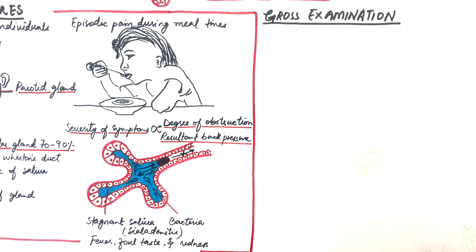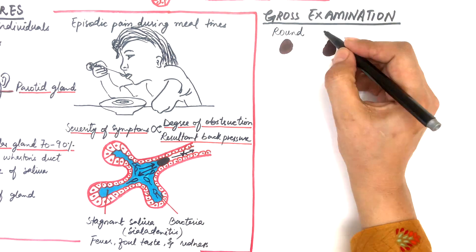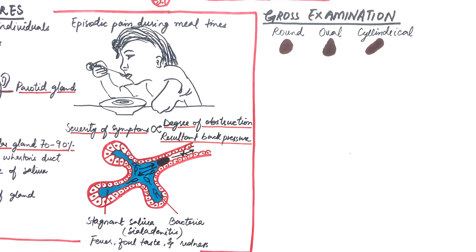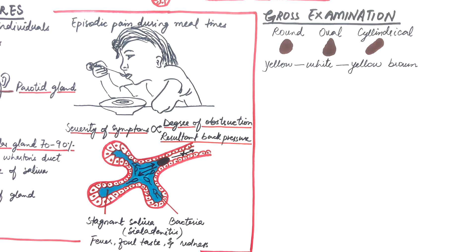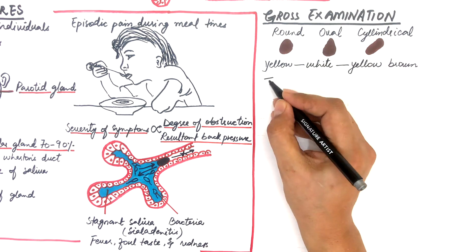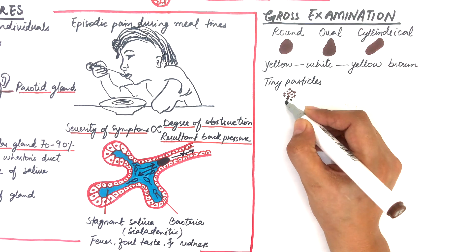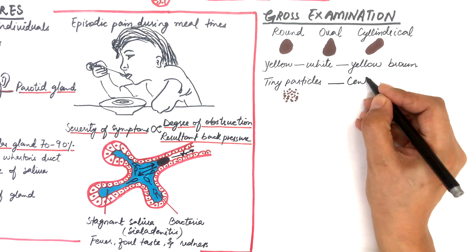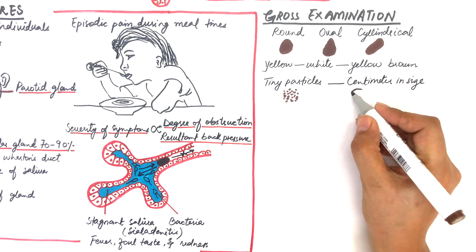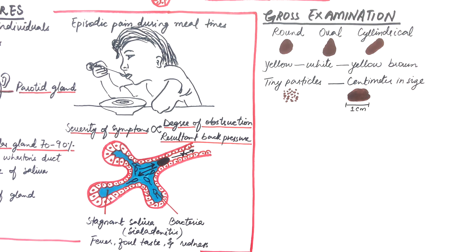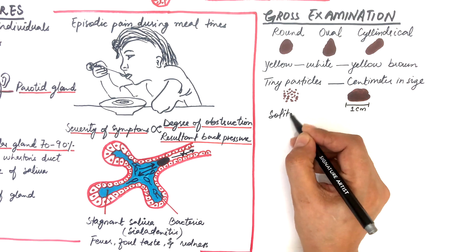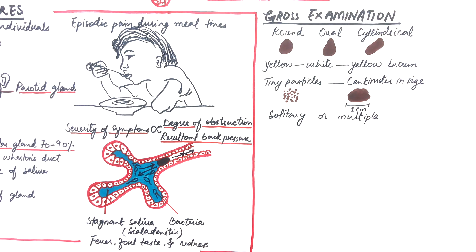On gross examination, the stone may be round, oval, or cylindrical in shape. They may be yellow to white to yellow-brown in color. The stones may range from tiny particles to stones that are several centimeters in size. The stones are usually solitary but there might be multiple stones present in a single region.